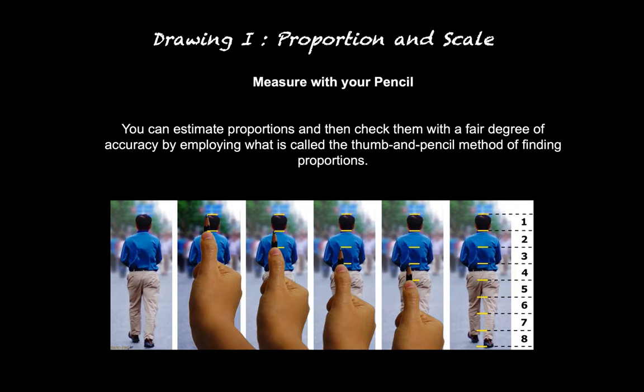What we're going to focus on is how we can draw the figure and really make it specific to that individual, rather than to some sort of overarching ideal that doesn't really fit anyone. You can estimate proportions and then check them with a fair degree of accuracy by employing what is called the thumb and pencil method of finding proportions.